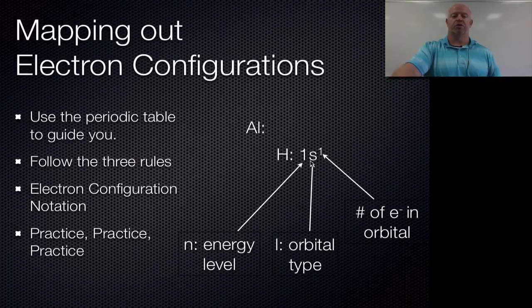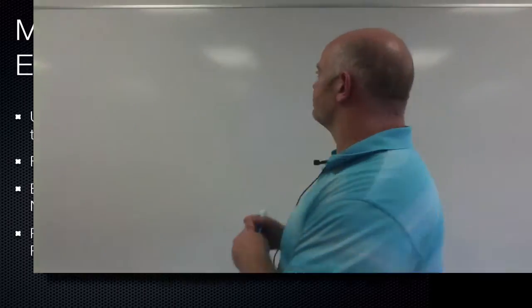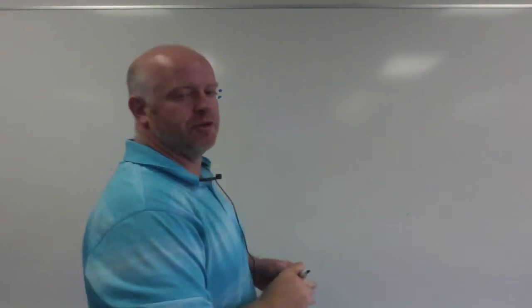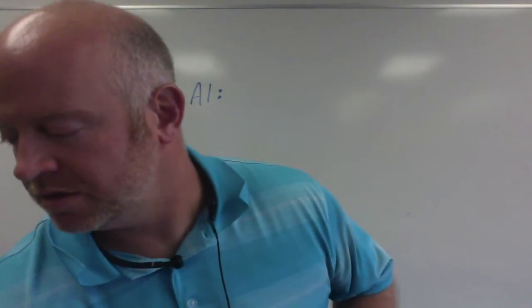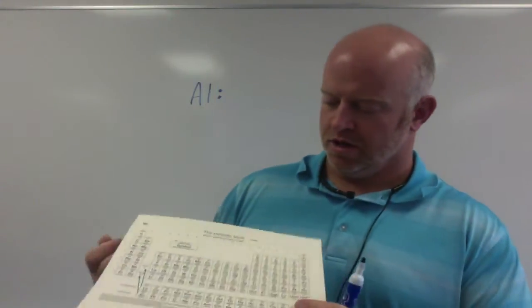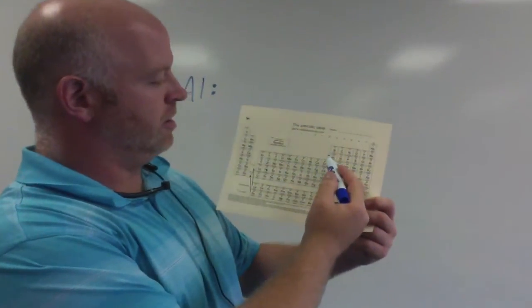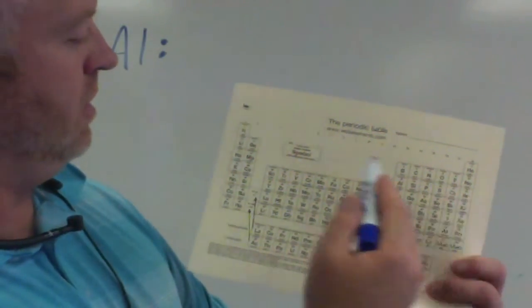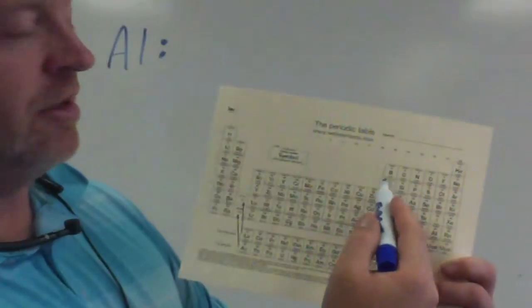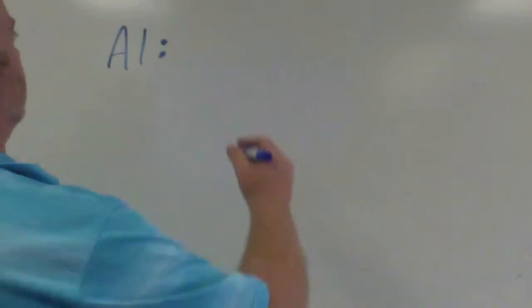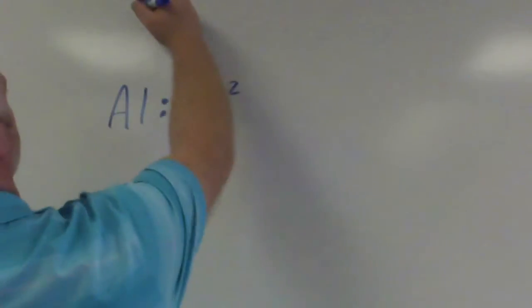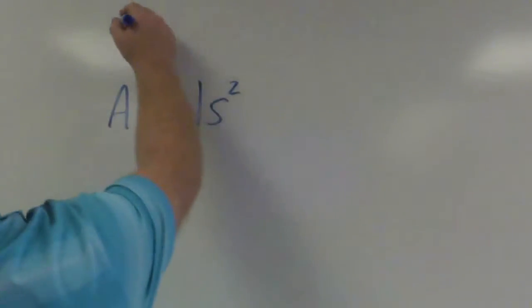Let's do aluminum together. Aluminum sits on the periodic table such that we're going to fill the 1S, the 2S, the 2P, the 3S, and put one electron in the 3P. In the first energy level, S-shaped orbital: 2 electrons. Aluminum has 13 electrons to start, so now I'm down to 11.